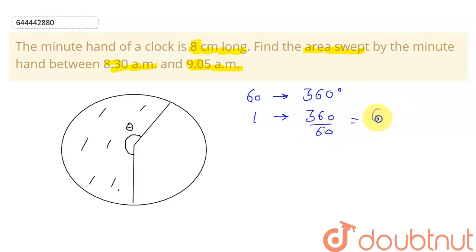What is that time difference? 35 minutes. So in 35 minutes, theta will be equal to 6 into 35, which is 210 degrees.